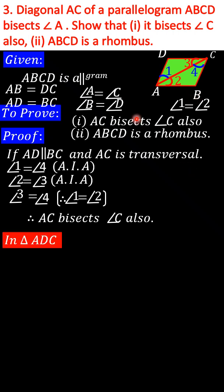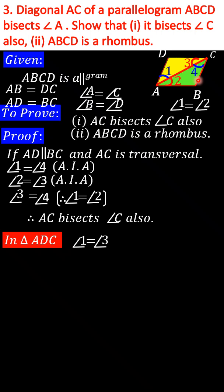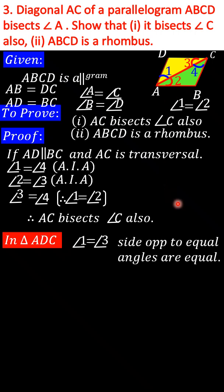Next, we have to prove ABCD is a rhombus. For this, considering triangle ADC: we already proved angle 1 is equal to angle 2 is equal to angle 3 is equal to angle 4. Therefore, in this triangle, angle 1 is equal to angle 3. So we can say AD is equal to DC, because the side opposite to equal angles are equal.